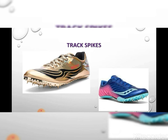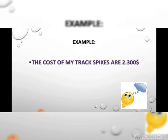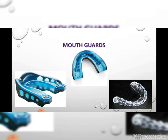Track spikes. Track spikes are racing shoes used by athletes when racing on a track. Track spikes became popular in England by the 1860s, but the concept of spikes in shoes to give running traction has been around much longer. Example: the cost of my track spikes is two thousand three hundred dollars.